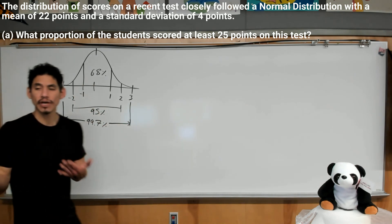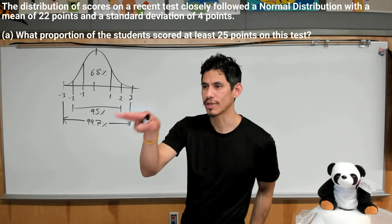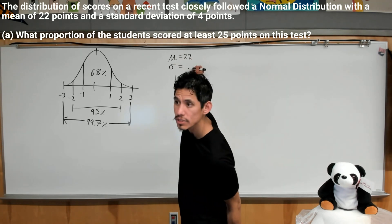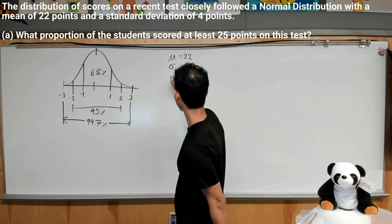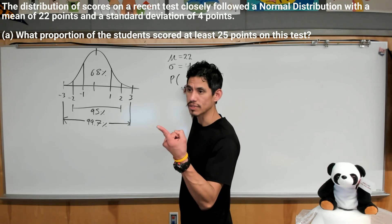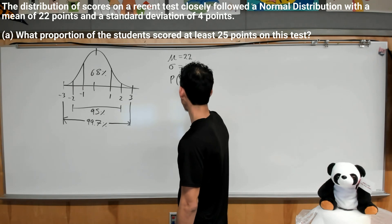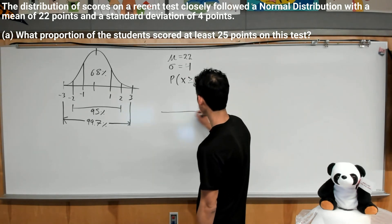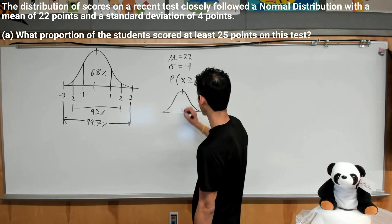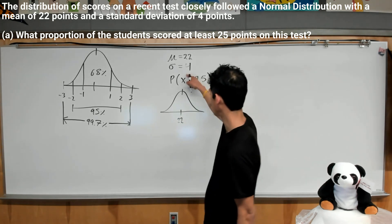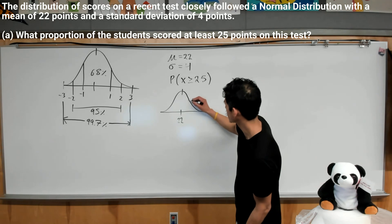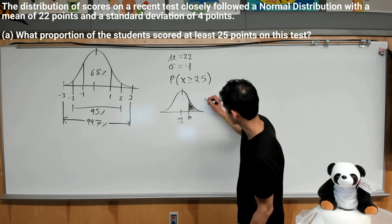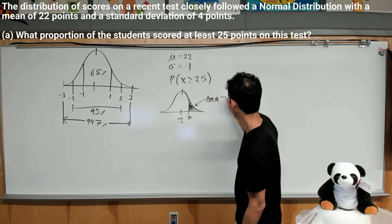Now here we have a mean of 22 and a standard deviation of 4 points. So μ is 22, σ is 4. And we want to find the proportion of scores that were 25 or more. So the probability that a score X was greater than or equal to 25 in a normal distribution where the mean is 22 and standard deviation is 4. That means we're basically trying to find the area to the right. So we want to find this area. That's our goal.